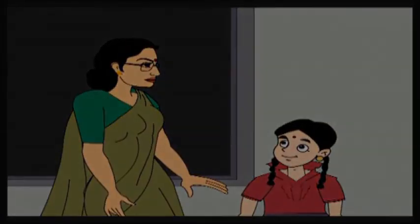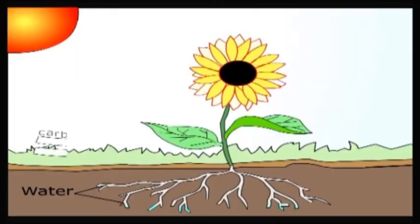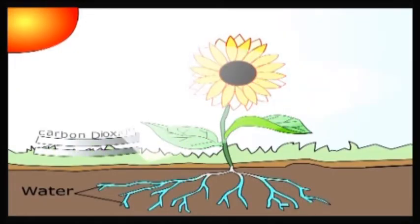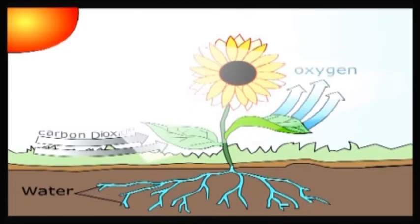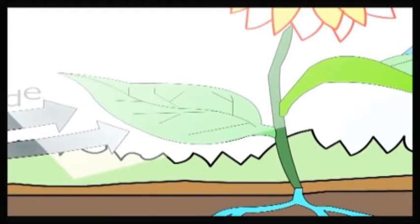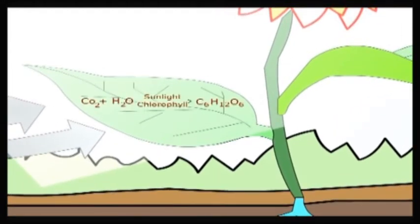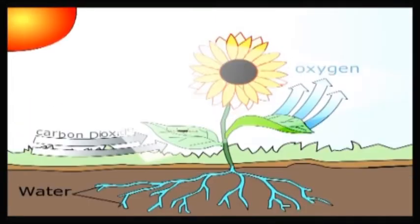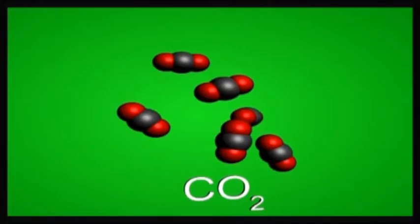We have already discussed that plants synthesize food from carbon dioxide and water in the presence of sunlight and chlorophyll. This process of photosynthesis requires energy. When carbon dioxide reacts with water, then chemical bonds are formed between atoms of carbon dioxide and water, and then a complex molecule of glucose is formed.